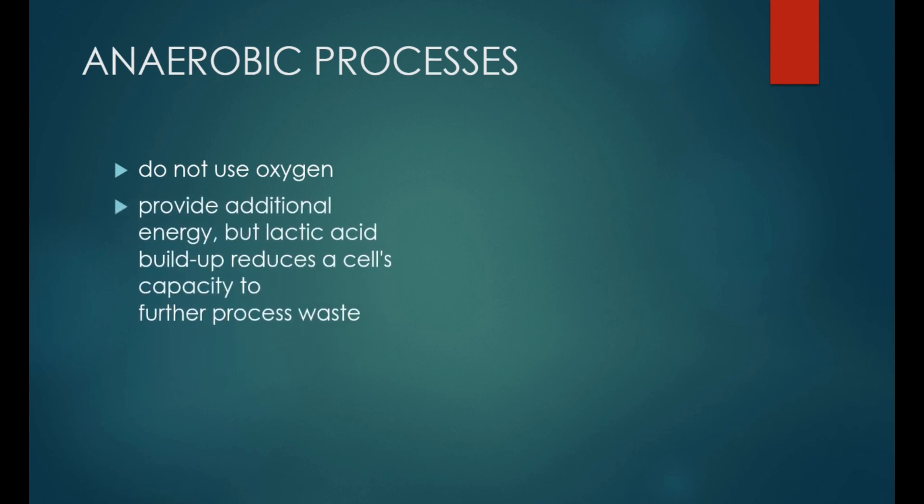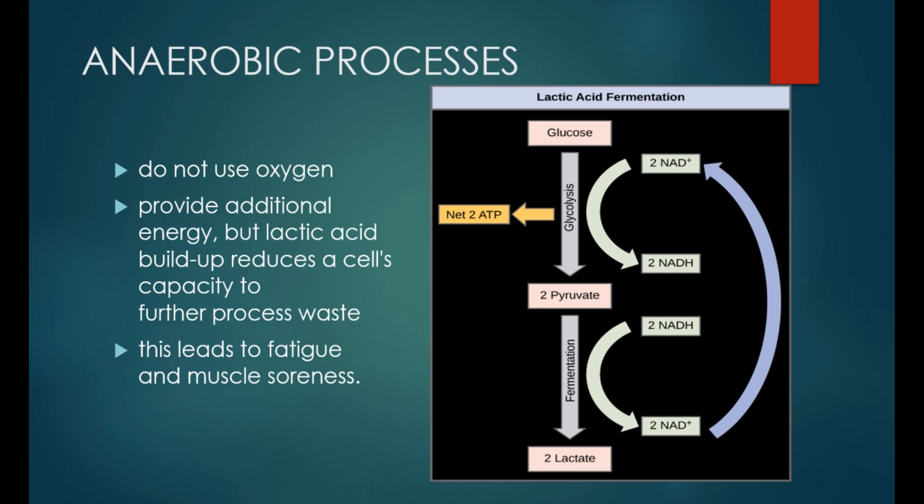Anaerobic processes on the other hand do not use oxygen so the pyruvate product ATP is one kind of pyruvate that remains in place to be broken down or catalyzed by other reactions such as what occurs in muscle tissues or in fermentation. Lactic acid which builds up in muscle cells as aerobic processes fail to keep up with energy demands is a byproduct of anaerobic process. Such anaerobic breakdowns provide additional energy but lactic acid buildup reduces a cell's capacity to further process waste. On a large scale in say a human body, this leads to fatigue and muscle soreness. So cells recover by breathing in more oxygen and through the circulation of blood helps carry away lactic acid.